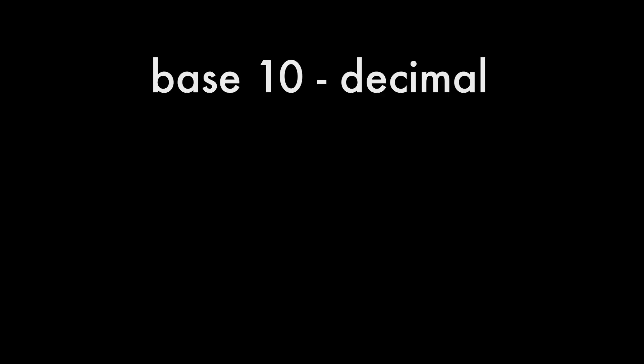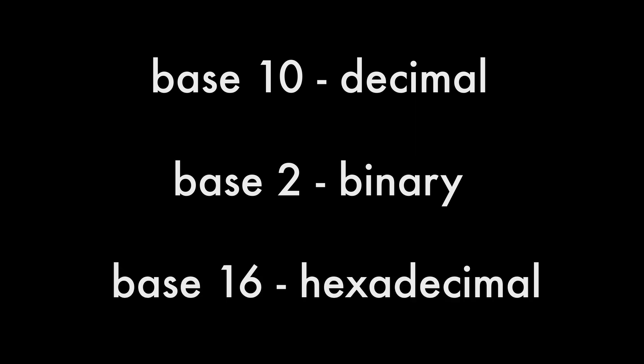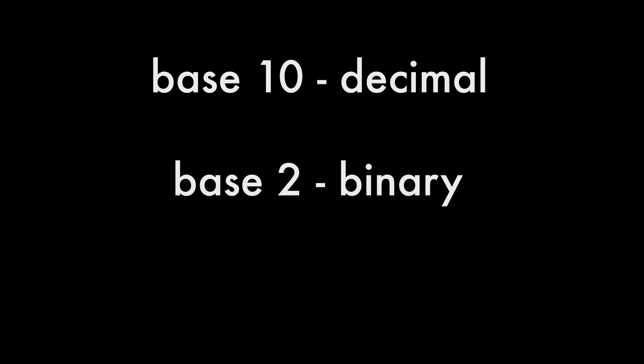The three different number systems that are used are base 10, which is the one we use every day; base 2, which is the binary system and represents digits with only a 0 and a 1; and base 16, which is called hexadecimal, or hex for short.